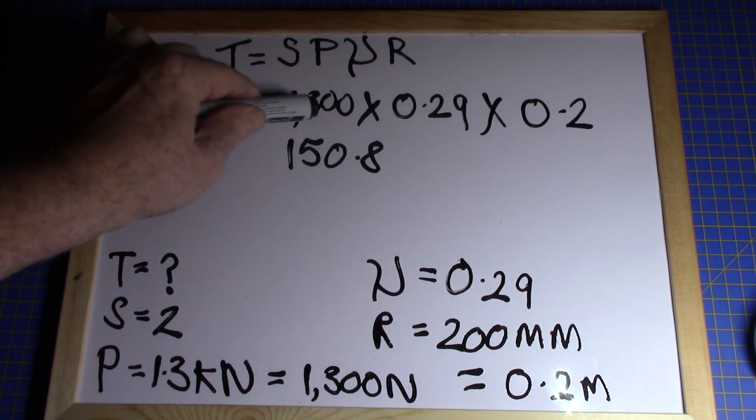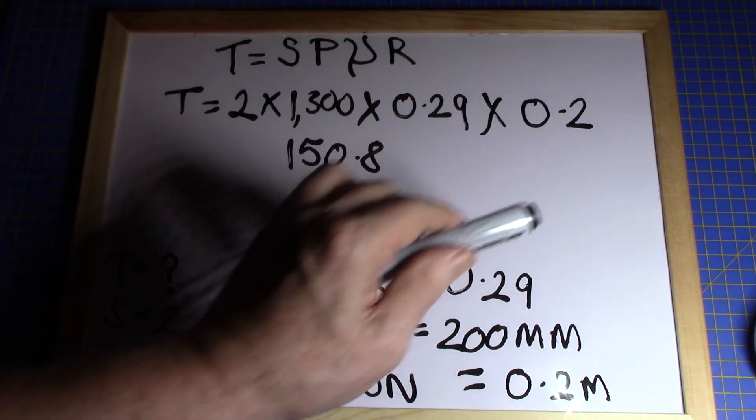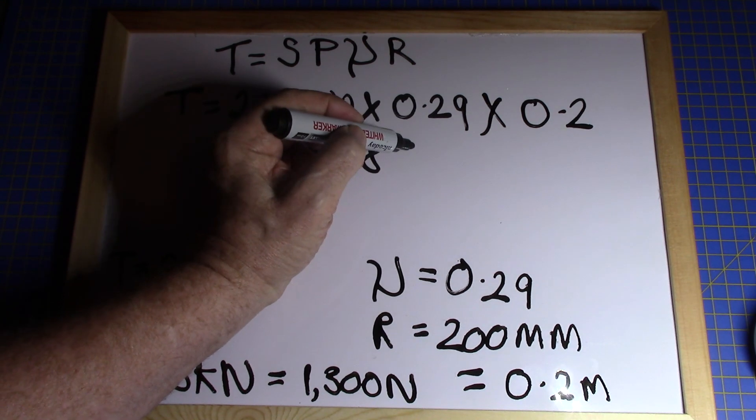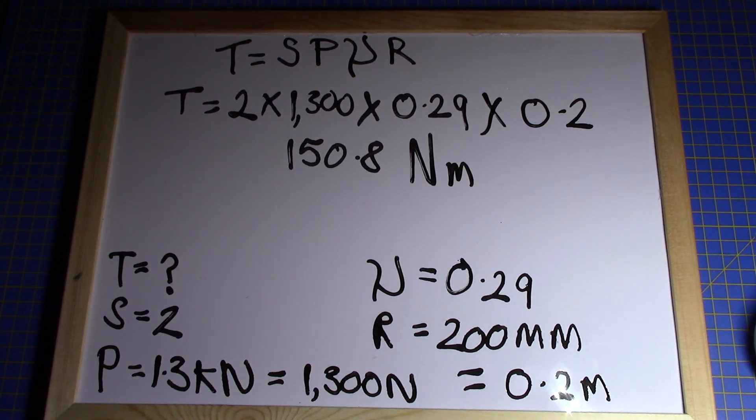What units of measurement? Well that's just a number, but this is newtons of force, that's just a number, it's just a ratio, and this is a distance. That's newtons times meters, so our answer is in newton meters. There's your answer, that's it, job done.